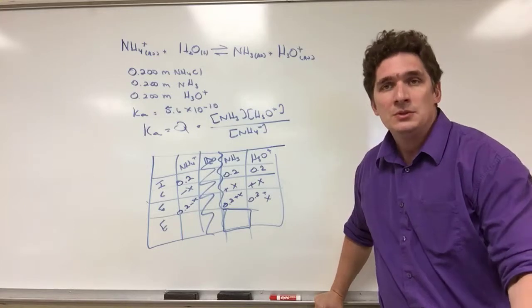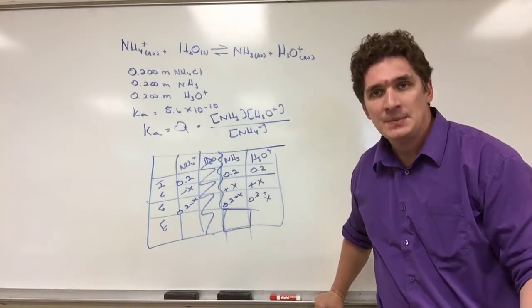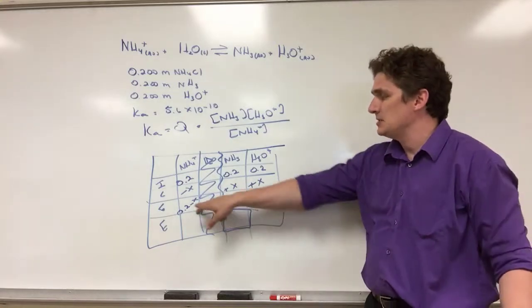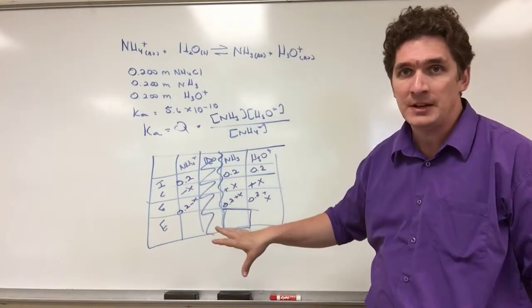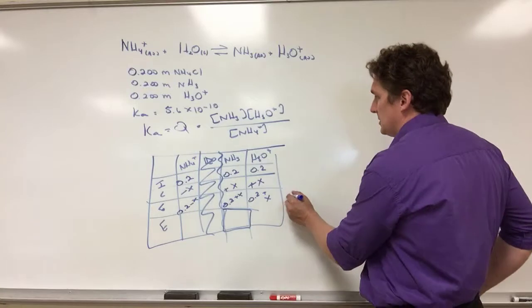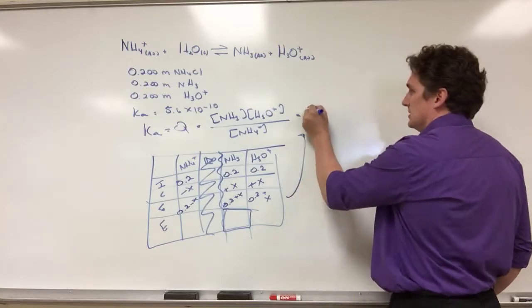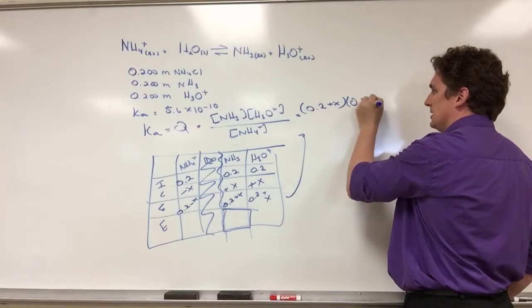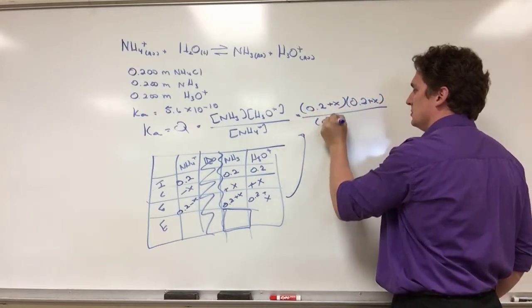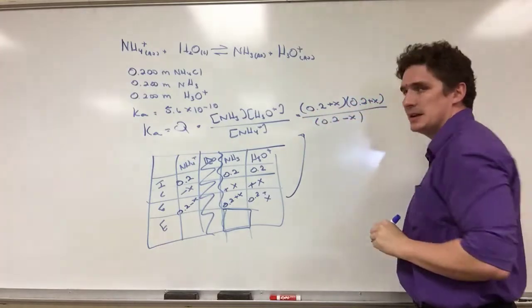I ask students to do this and say, okay what would you do next? And the next step is, well I need this row, so odds are I'm going to have to use the analytical row because I'm not given any equilibrium values. So I'm going to plug in my expressions and what I get is 0.2 plus X times 0.2 plus X all over 0.2 minus X.